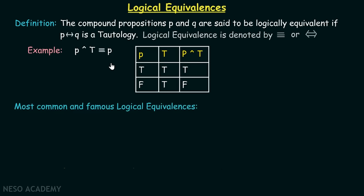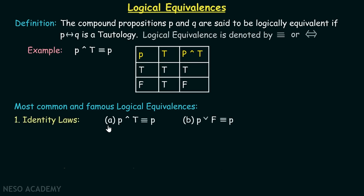Now let's consider the most common and famous logical equivalences. The first one is identity laws: P AND True is equivalent to P, which we already saw in the example. P OR False is equivalent to P. When P is true, True OR False is true, which is equivalent to P. And when P is false, False OR False is false, which is also equivalent to P. That is why P OR False is equivalent to P.